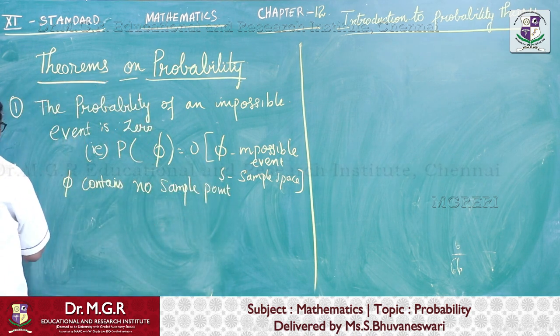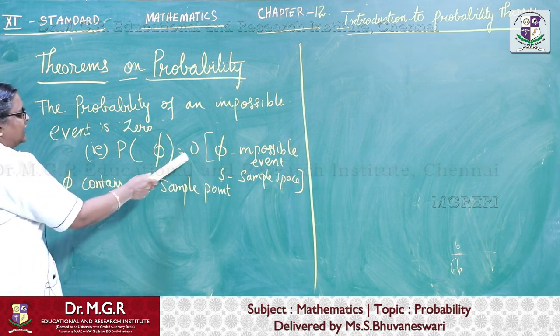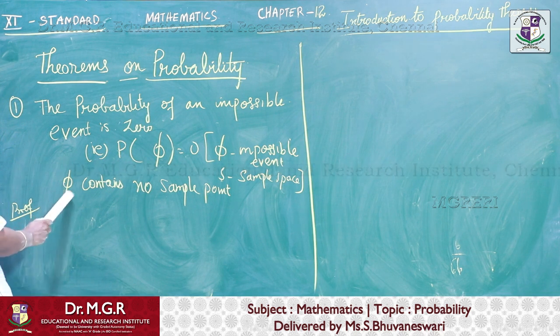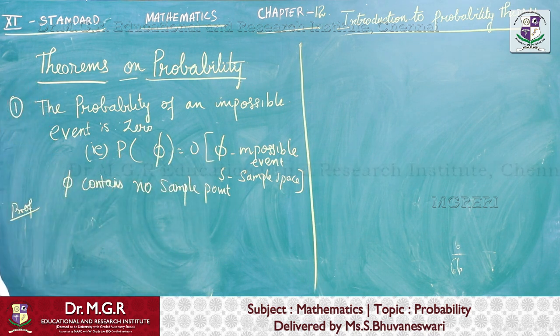Now let us start with the proof. How to show P of phi equal to 0? So phi contains no sample point at all and S is a sample space. Can we join these two? Yes, of course.